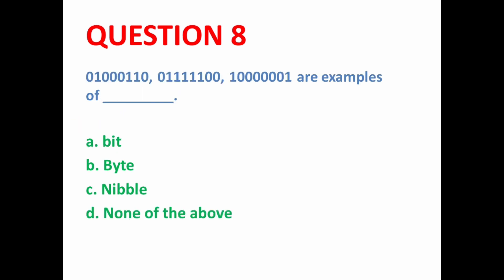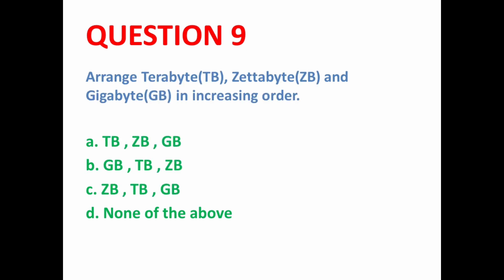Next MCQ: 01000110 — here eight digits are given in the form of zeros and ones. You have to identify what this is an example of. If a single digit is zero or one, it is called a bit. A collection of four bits is called a nibble. A collection of eight bits is called a byte. So here option B is the correct option.